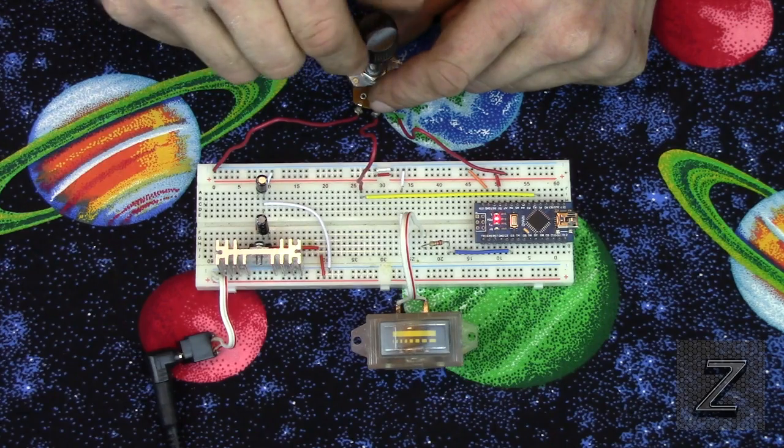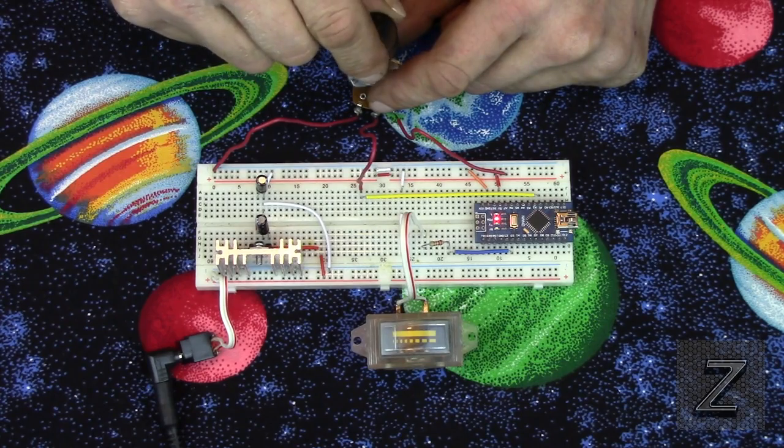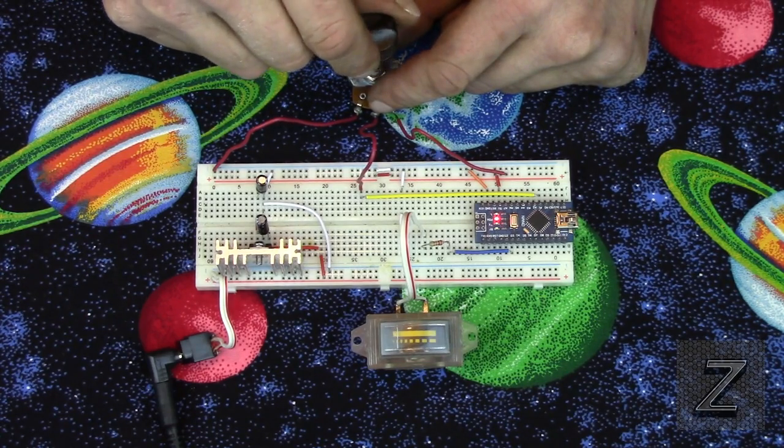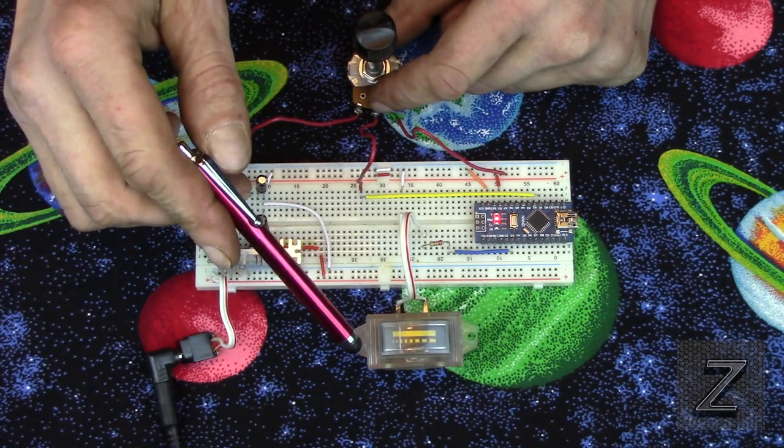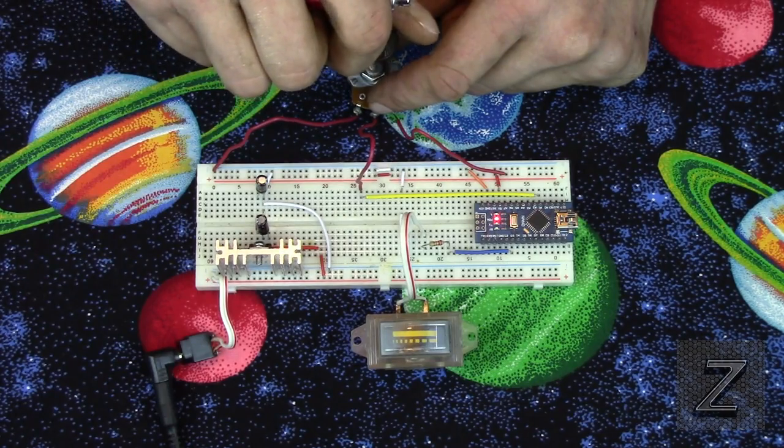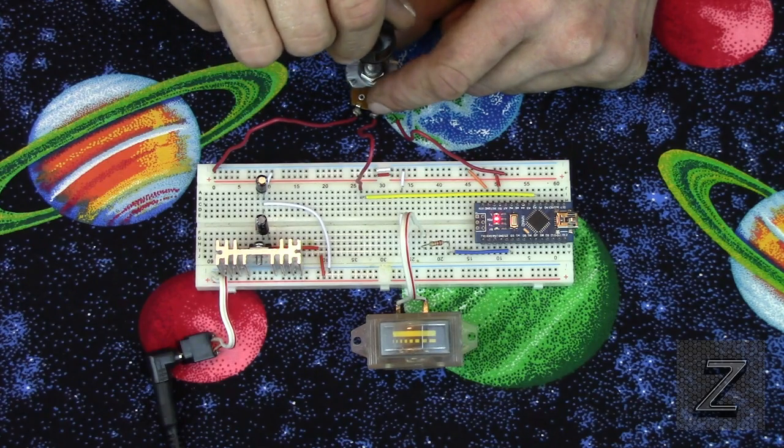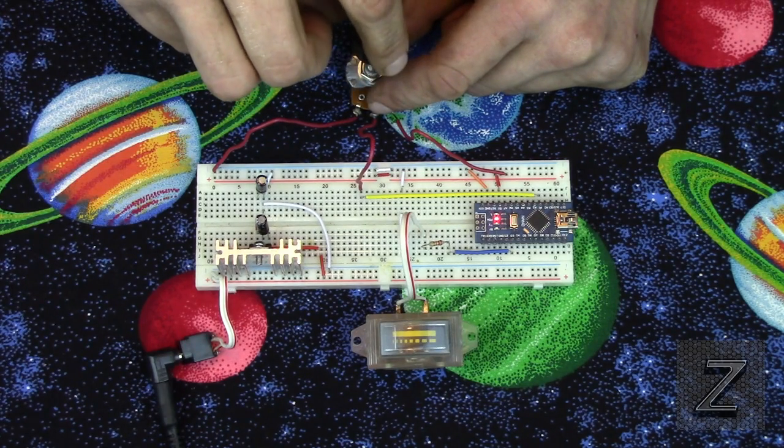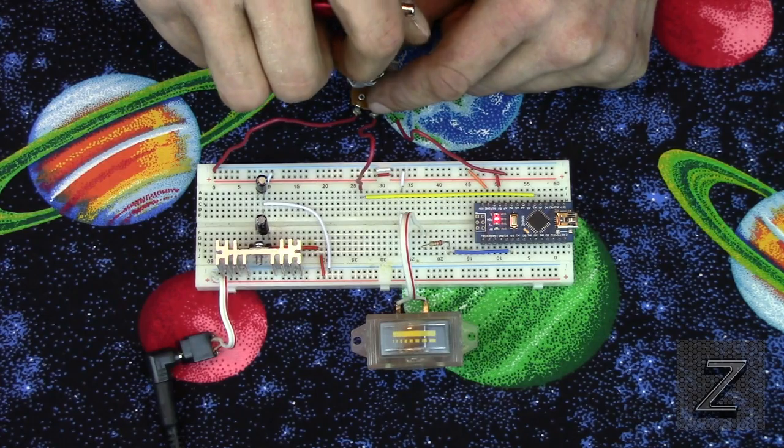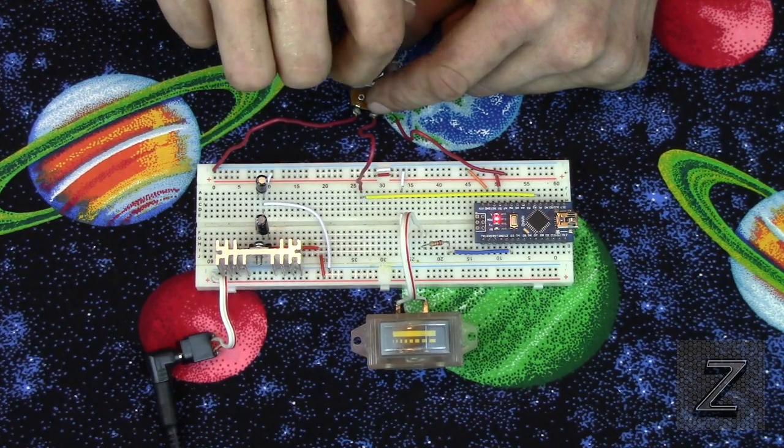When it gets down close to the end, you notice I can turn this about an eighth of a turn yet, and nothing shows. That's because the meter does need a certain amount of voltage before it will actually move. I have the sketch set up on this to go from the minimum to maximum. As you can see, it's working there.